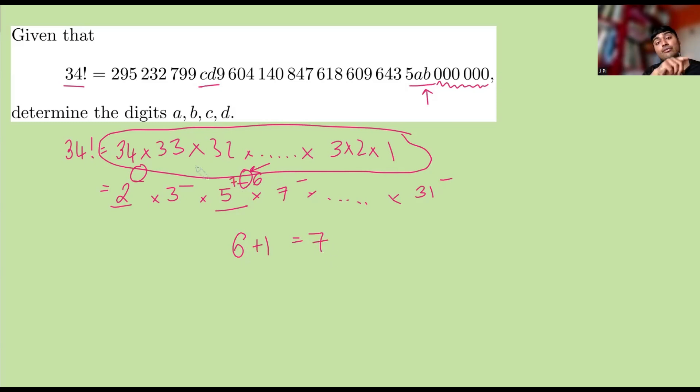So in fact, in the prime factorization of 34 factorial, it's 5 to the power of 7. And that tells us that this number should end in seven zeros, and therefore we can conclude that B must also be 0.